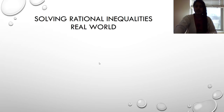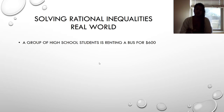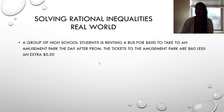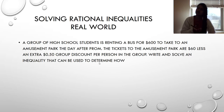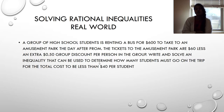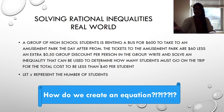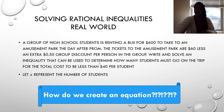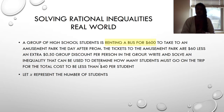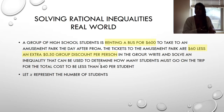Now let's look at a real-world inequality. A group of students rents a bus for $600 to an amusement park. The ticket is $60, less a 50-cent group discount per person. Write and solve an inequality to determine how many students must go for the total cost to be less than $40 per student. Let X represent the number of students.